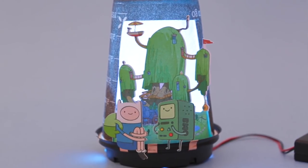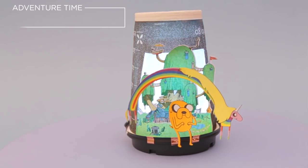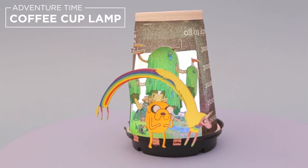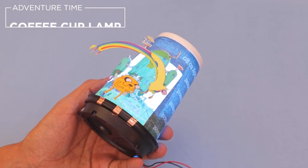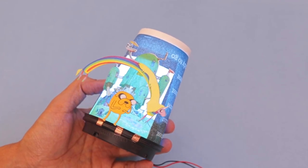In this project we'll show you how to build a coffee cup lamp using Adafruit Circuit Playground and Microsoft Makecode. Design your own lamp out of a paper cup and use capacitive touch to change the colors of the LEDs.